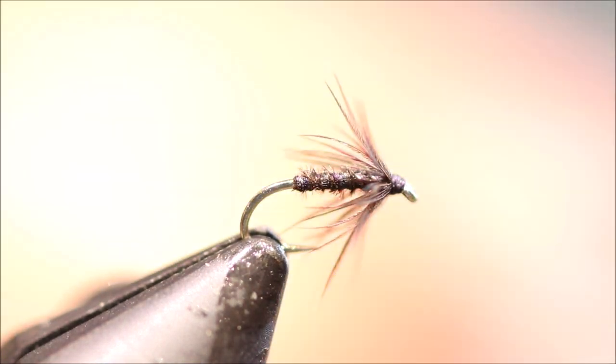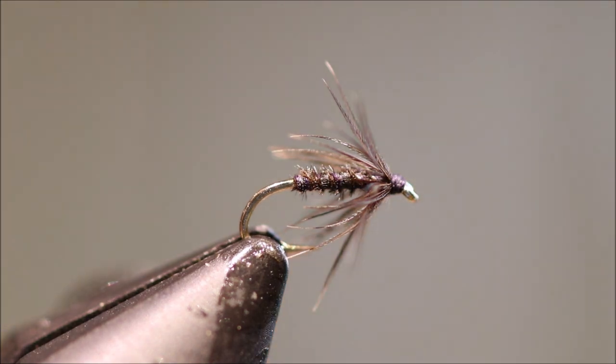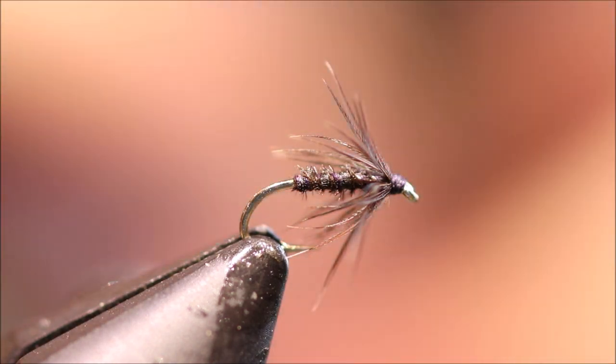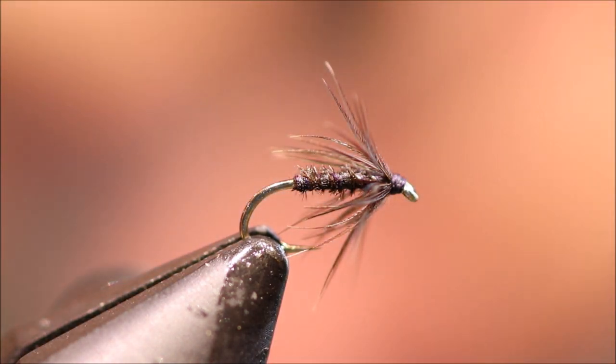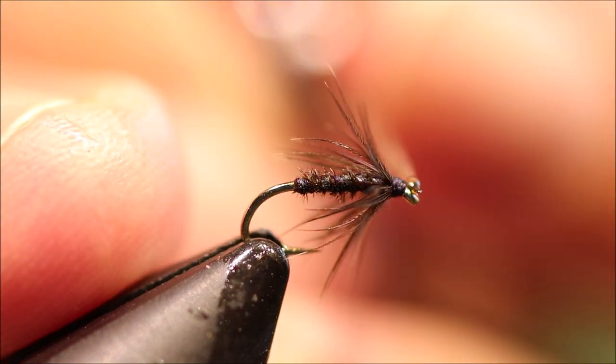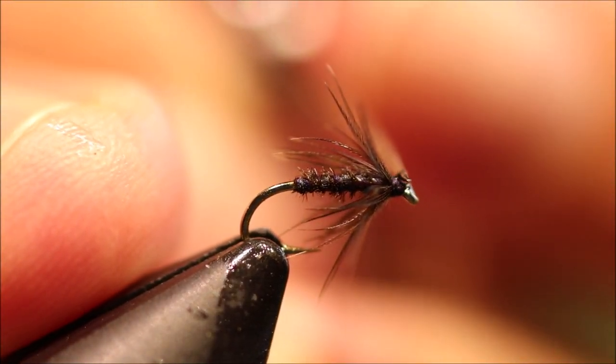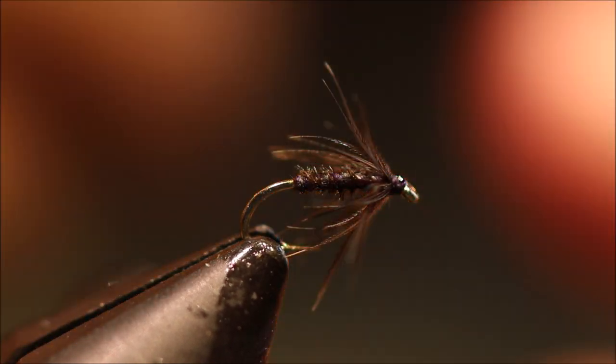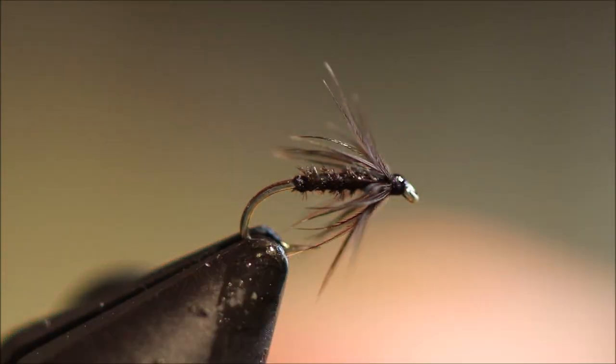Then just a wee spot of head cement and the fly's done. Just get it on the eye and onto the silk. Don't touch your hackle. Then you can clear the eye.